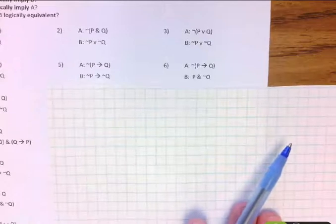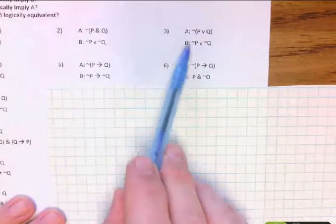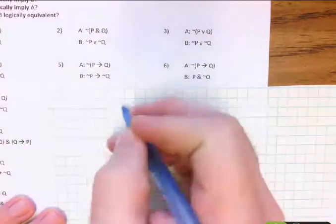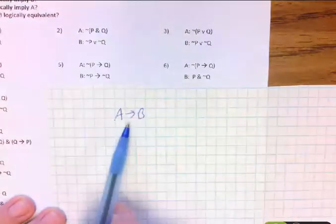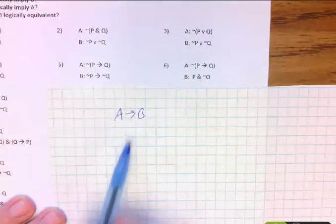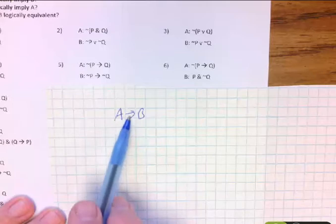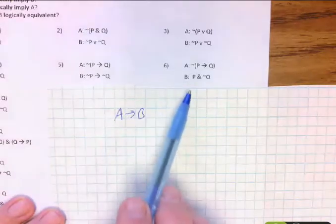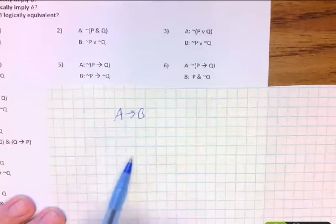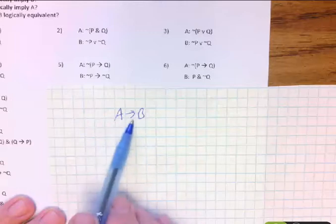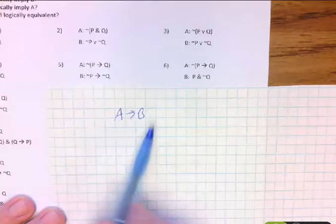So if I'm going to see if A logically implies B, then I basically am looking for A implies B, and I'm trying to see if this ends up being a tautology, where that final column is all true. So if A logically implies B, this should be a tautology. So I'm basically just going to set up a truth table and see what happens.